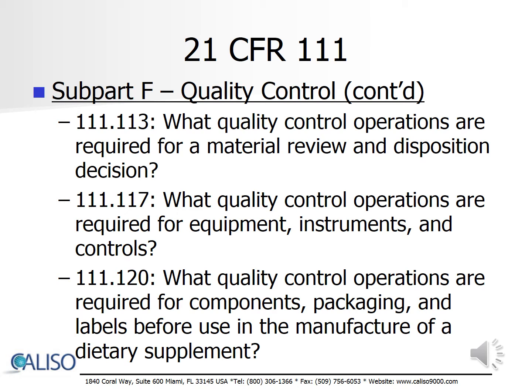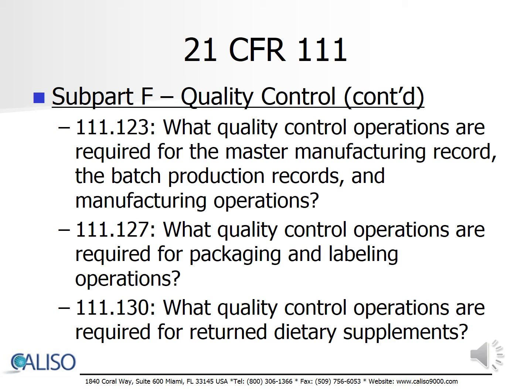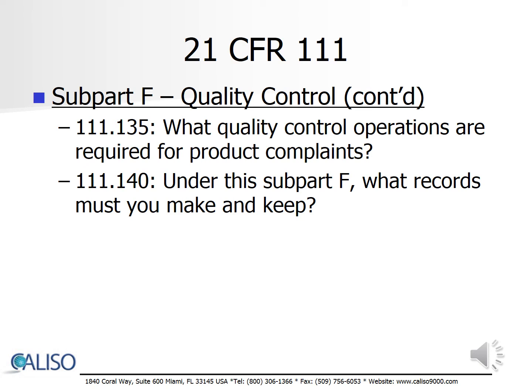Subpart F continues on to require that quality control personnel must conduct a material review and make a disposition decision if an established specification is not met or a batch deviates from the master manufacturing record. They will also manage the calibration system and review all records for components, packaging, and labels. Subpart F also outlines the responsibility of quality control personnel to review and approve all master manufacturing records, batch production records, conduct material reviews, etc. They must also approve and release all quarantine materials and manage any returned dietary supplements. Finally, Subpart F discusses the quality control requirements for product complaints, which include reviewing and approving decisions about whether to investigate.